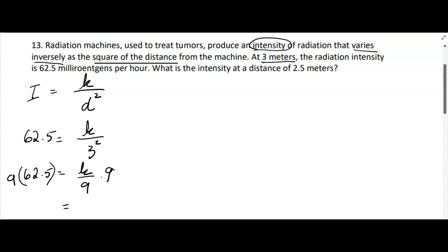To solve for K you're going to multiply by 9 on both sides and you're going to get K to be, I did it on a calculator, I got 562.5. So I would just leave it that way as a decimal.